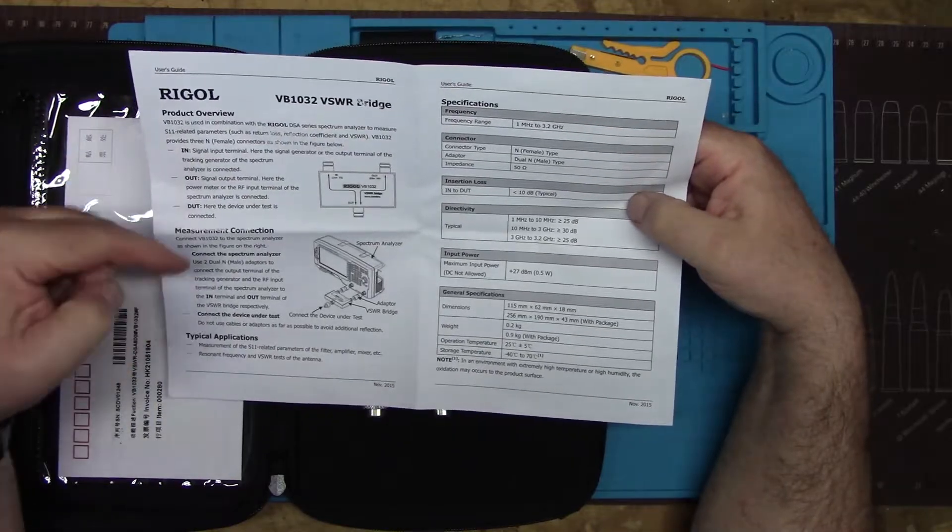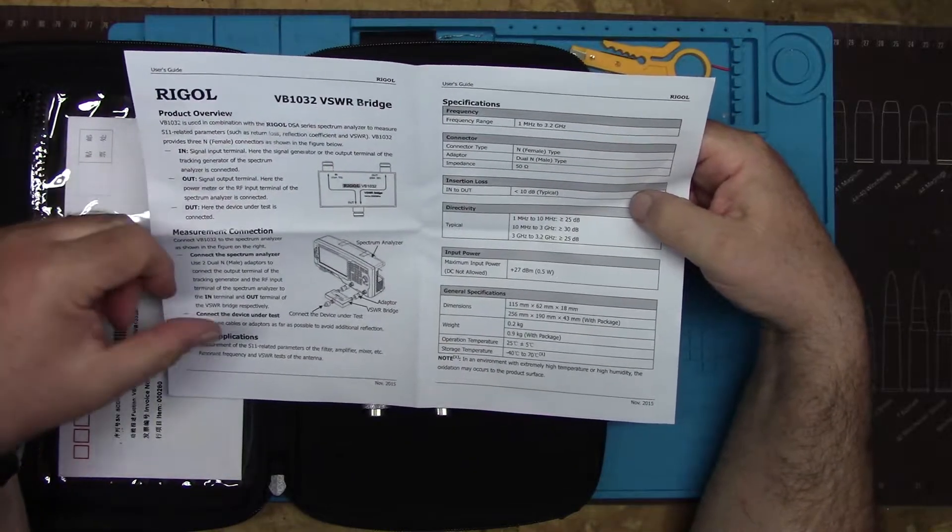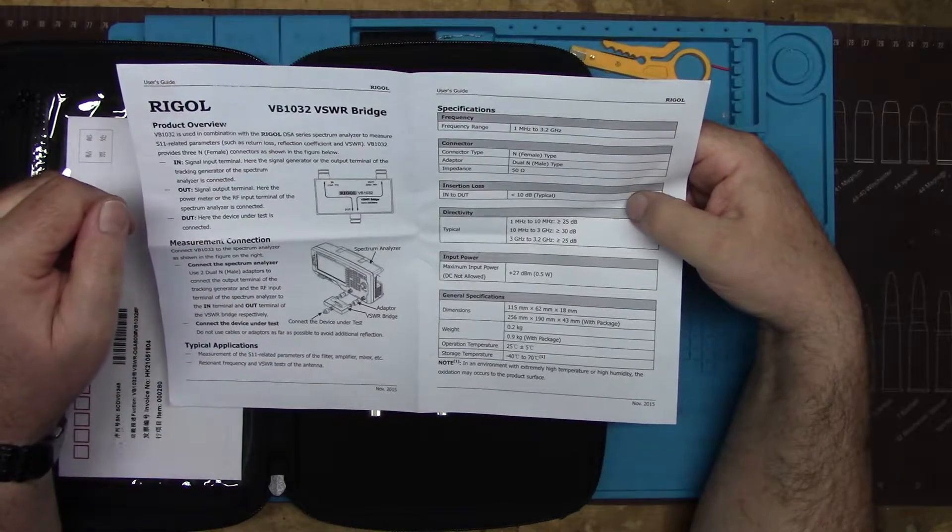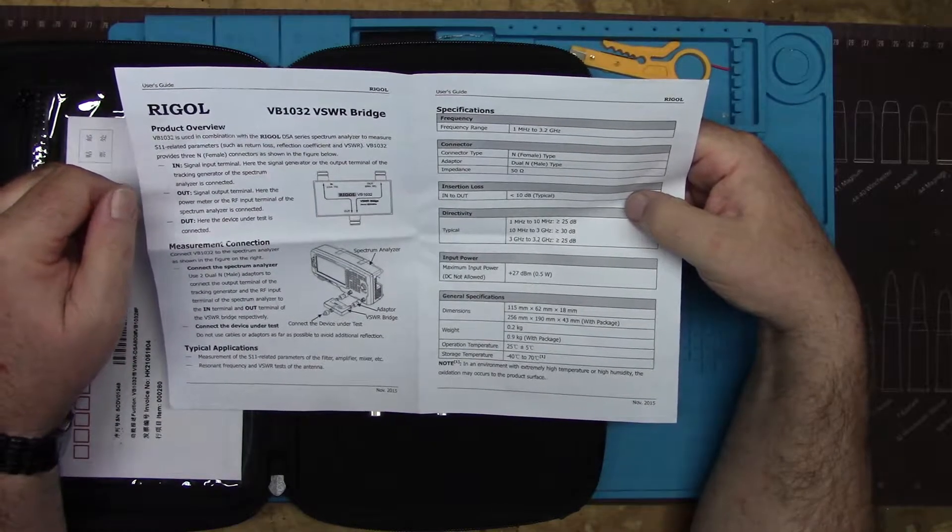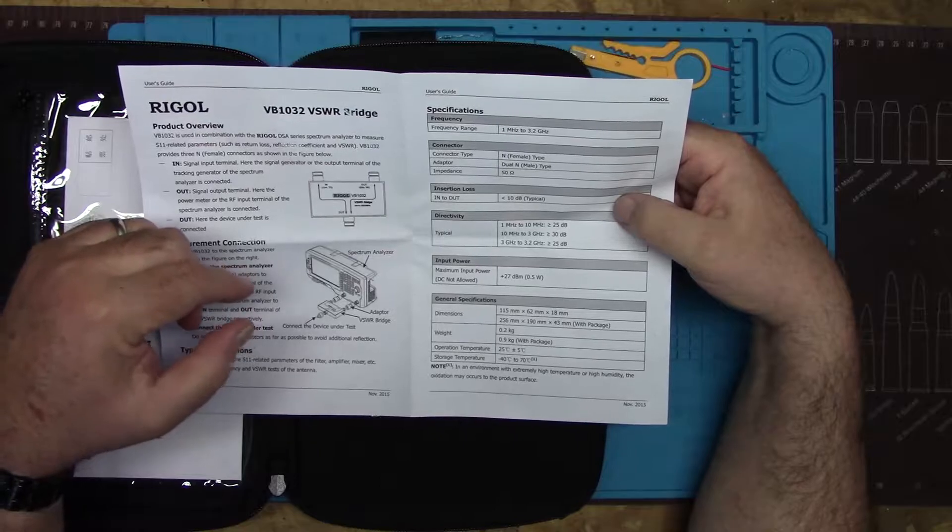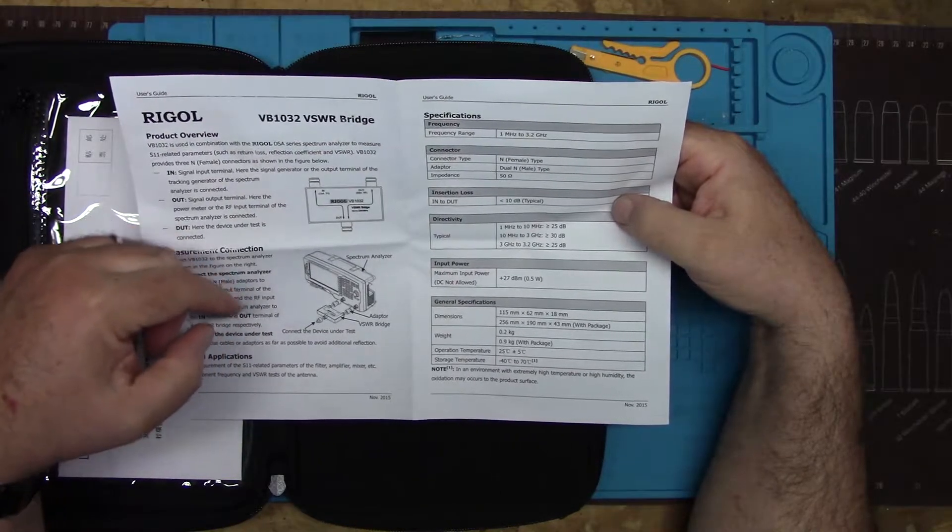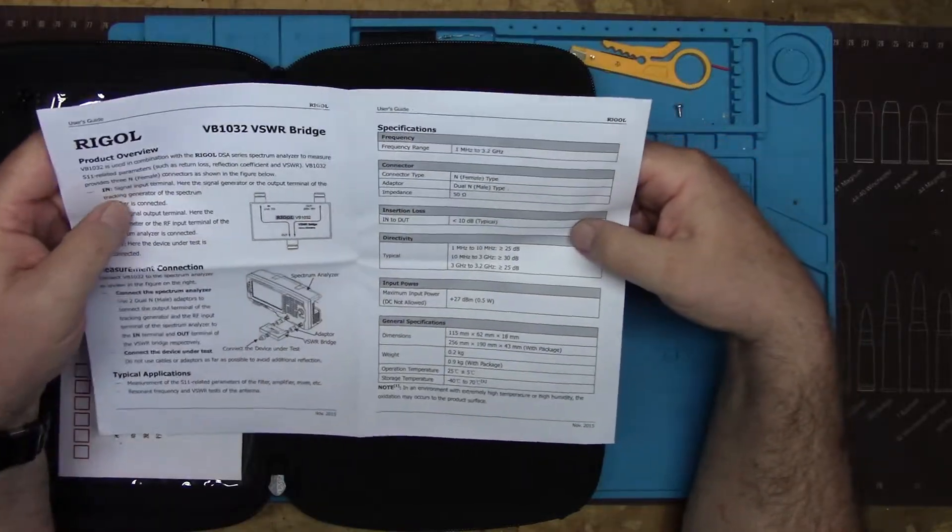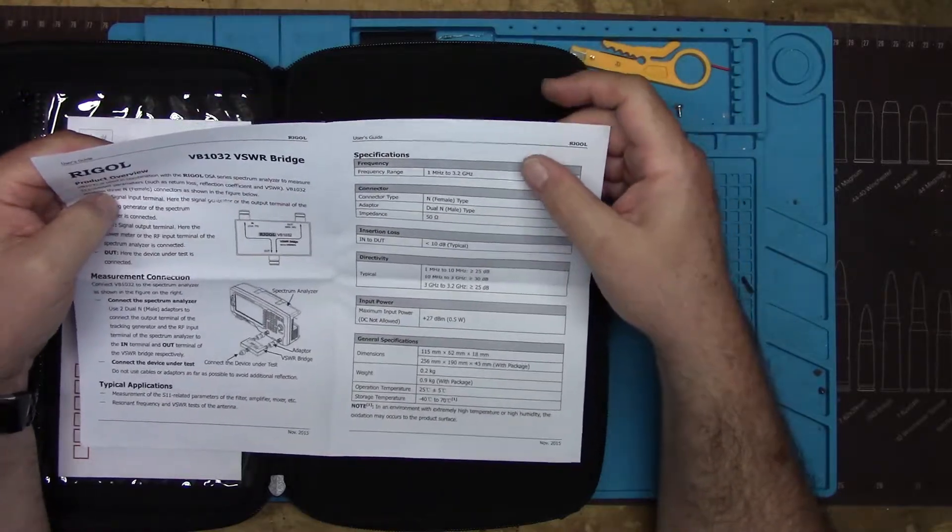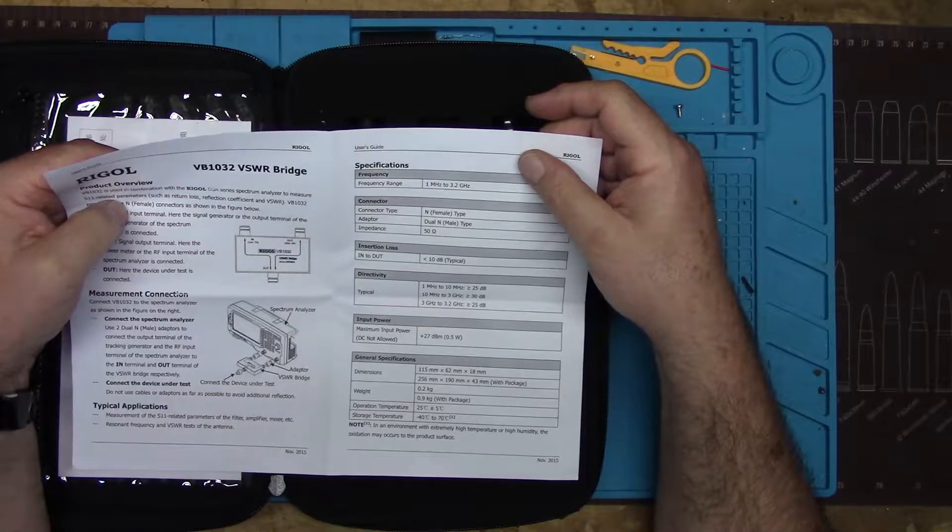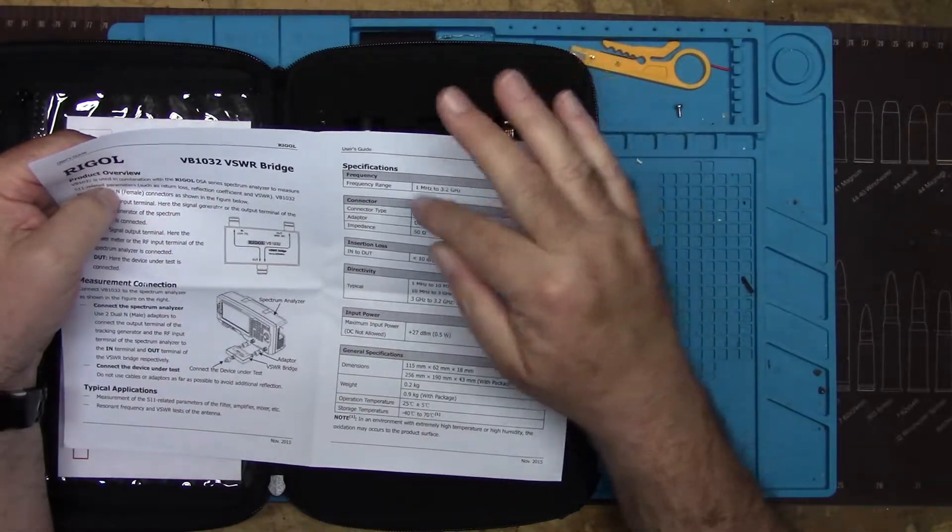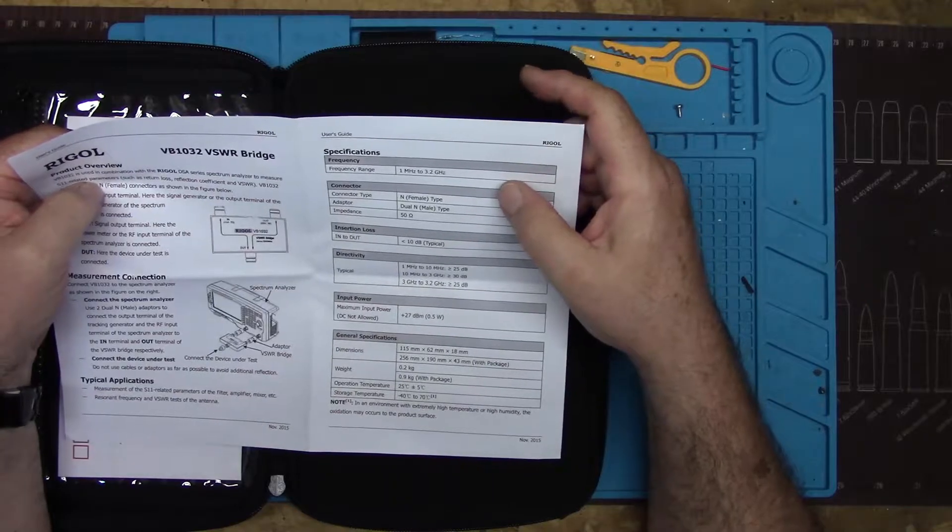It came with a small product overview sheet. This measures the S11 related parameters - filters, amplifiers, mixers, resonant frequencies, and VSWR tests of an antenna. Anything you can do with a nano VNA that uses the S11 port, you can do with this on a spectrum analyzer. The frequency range on this is one megahertz to three point two gigahertz.